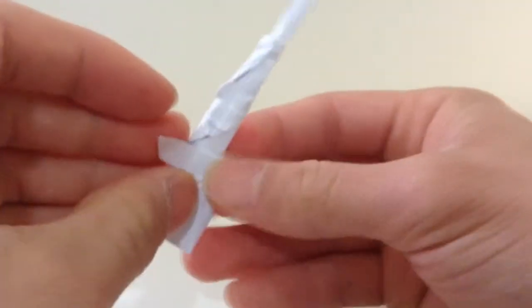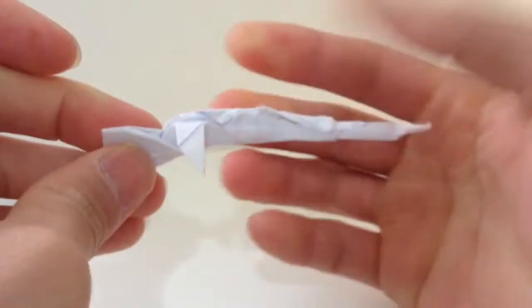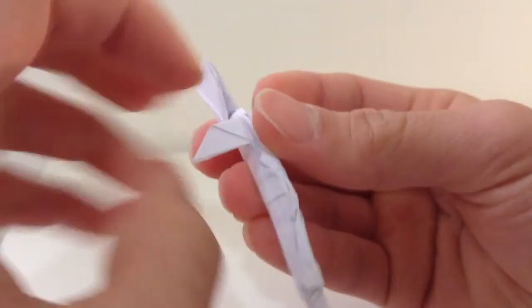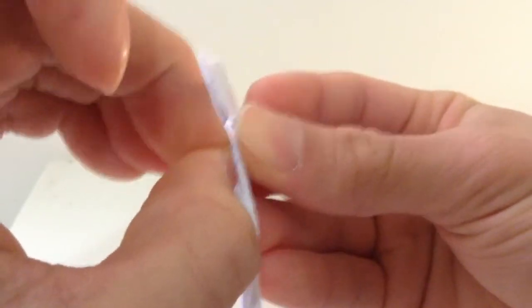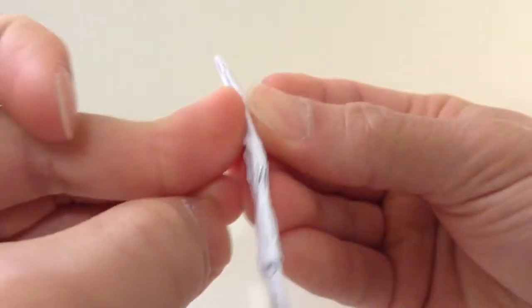Now, for the bolt, you're gonna fold this down and fold that in half. So fold this whole thing in half, like that. Then fold it to the front.